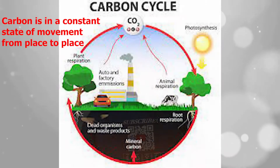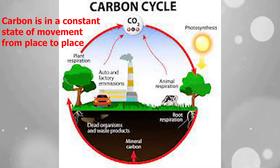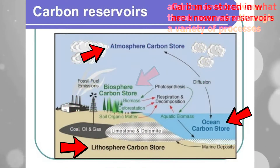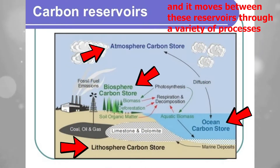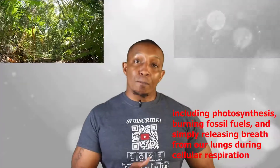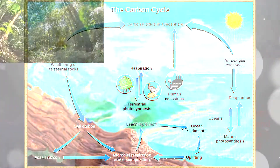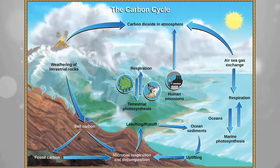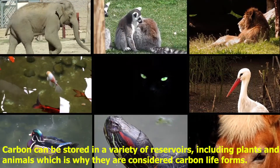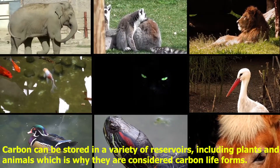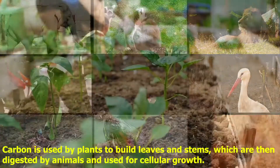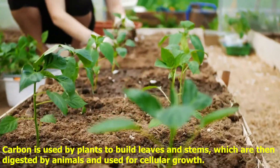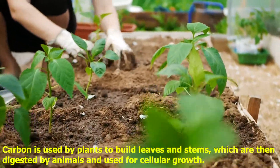Where is carbon stored? Carbon is in a constant state of movement from place to place. It is stored in what are known as reservoirs, and it moves between these reservoirs through a variety of processes, including photosynthesis, burning fossil fuels, and releasing breath from our lungs during cellular respiration. The movement of carbon from reservoir to reservoir is known as the carbon cycle. Carbon can be stored in a variety of reservoirs, including plants and animals, which is why they are considered carbon life forms. Carbon is used by plants to build leaves and stems, which are then digested by animals and used for cellular growth.